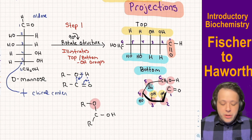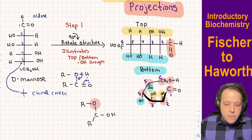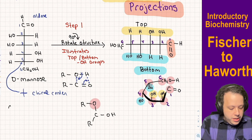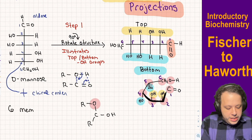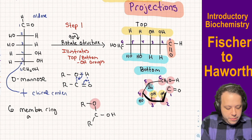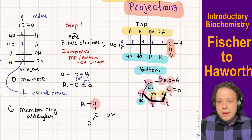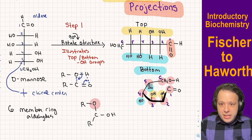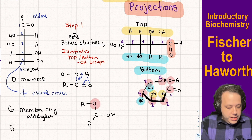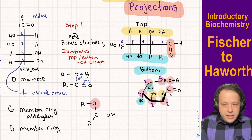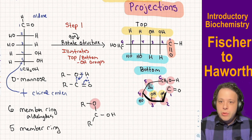A quick way to remember: it's always going to be either a six-member ring — typically for aldehydes, and probably 99% of examples you'll see in biochemistry — or a five-member ring. These are the most stable ring structures we can find in biochemistry.